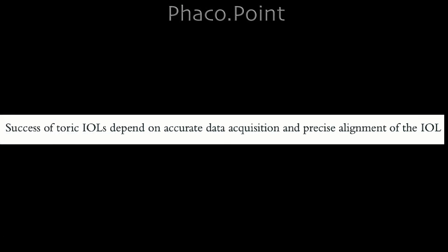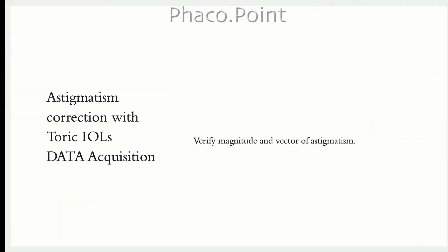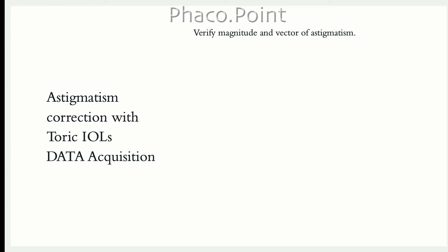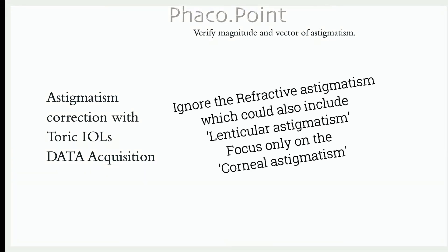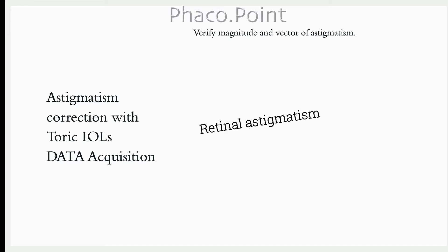The toric IOL's success depends on two factors: the accuracy of data acquisition and the precision of axis alignment during the surgical procedure. The most important data needed are the correct magnitude and vector of corneal astigmatism. Refractive astigmatism is not relevant as it incorporates lenticular astigmatism, which will be removed during cataract surgery. Although some patients possess a small degree of retinal astigmatism, this is difficult to determine and hence ignored.